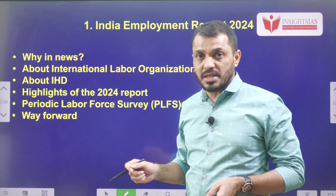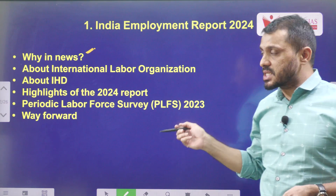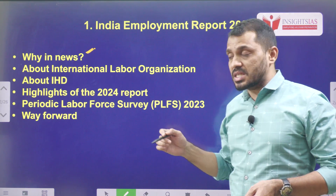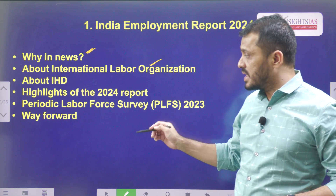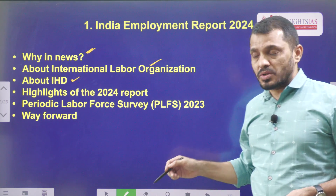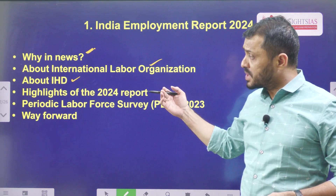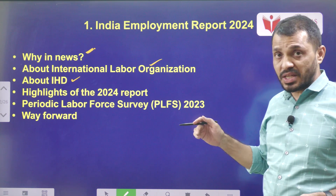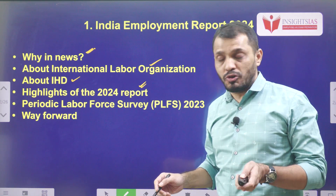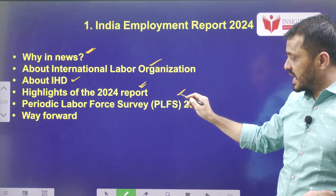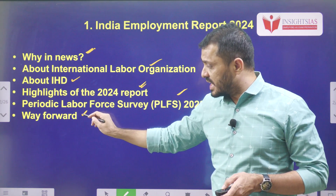In this topic, we are going to discuss about the following subtopics: first, we try to understand the context — why we are discussing this particular topic today. Then we will discuss about the organizations involved in this report, such as the International Labour Organization and IHD — when these organizations were established and what their objectives are. After that, we will discuss about the 2024 report and its highlights. Then at the end of the video, we are going to discuss about the Periodic Labour Force Survey, PLFS 2023 and the important data related to PLFS. Finally, the way forward.